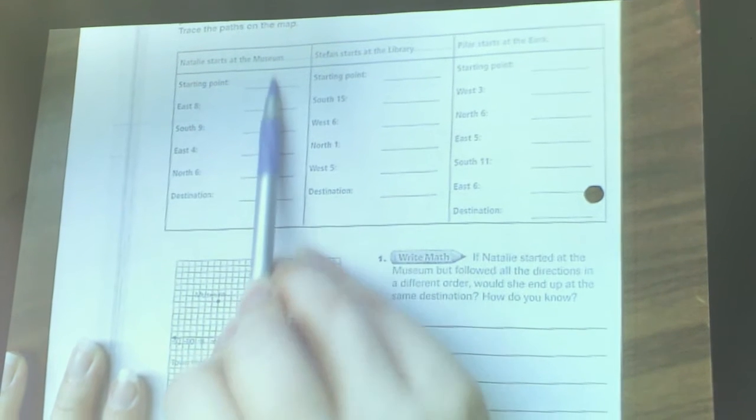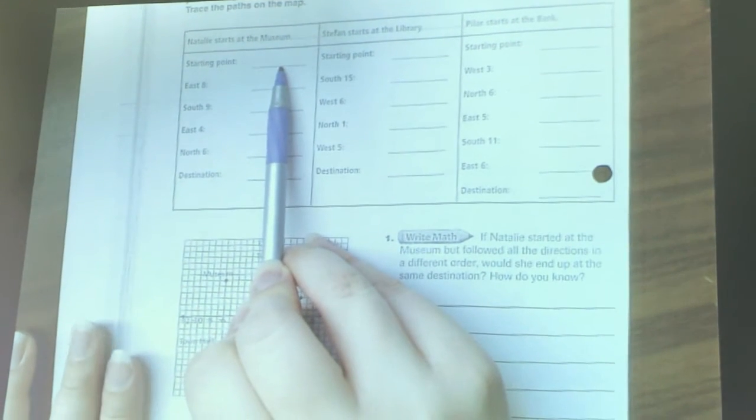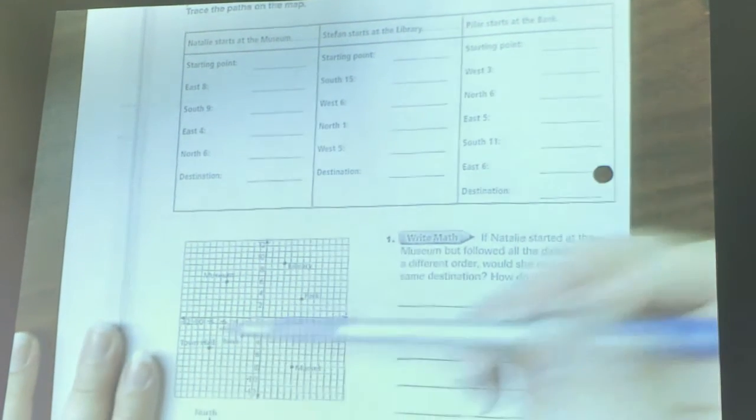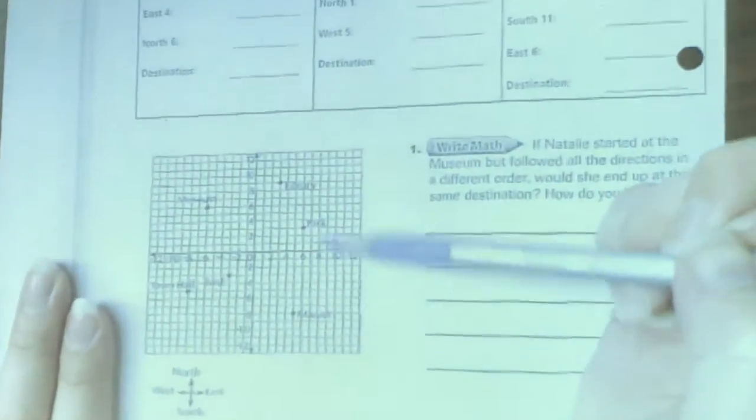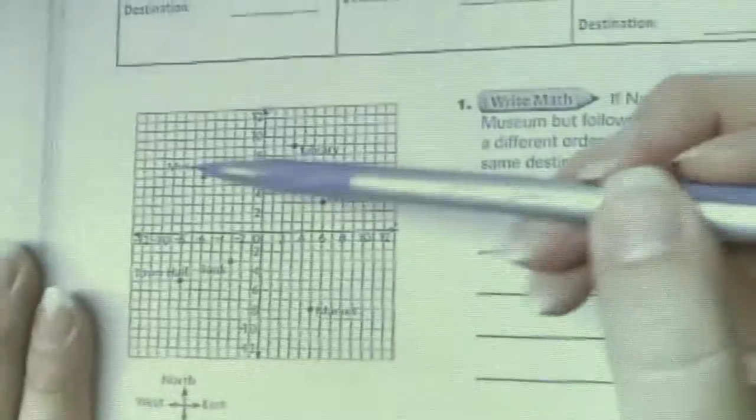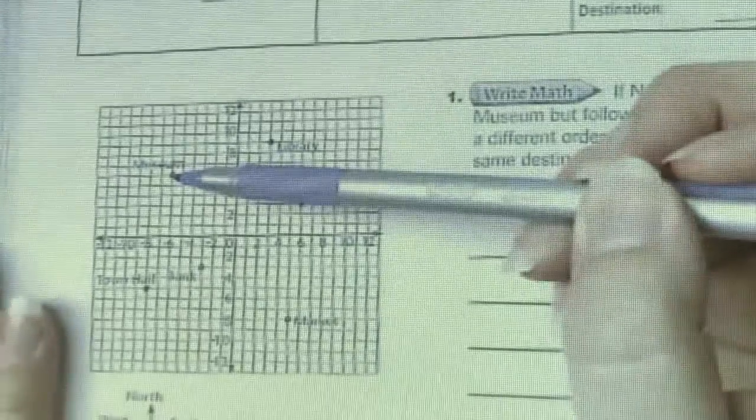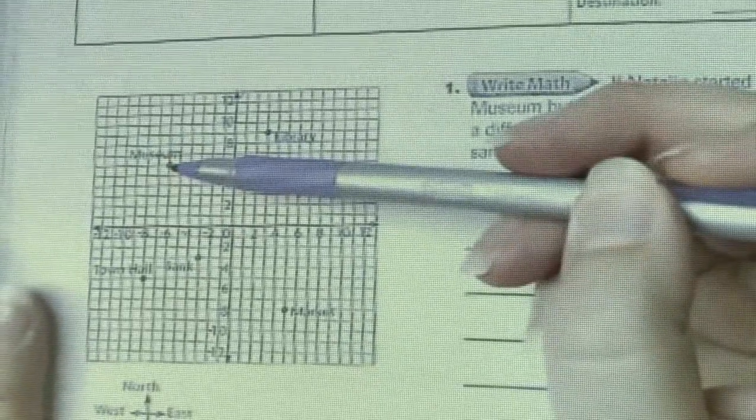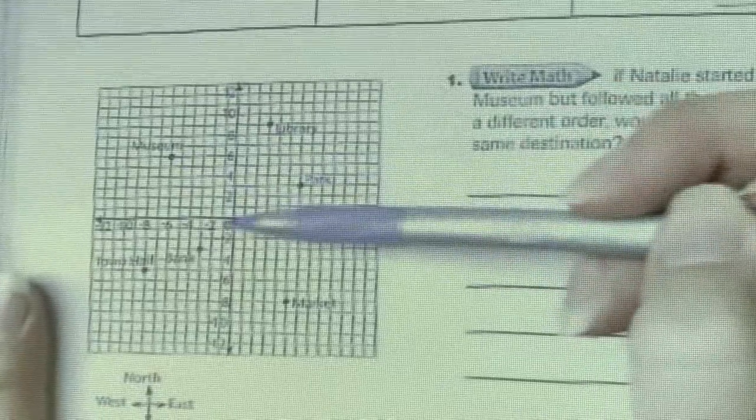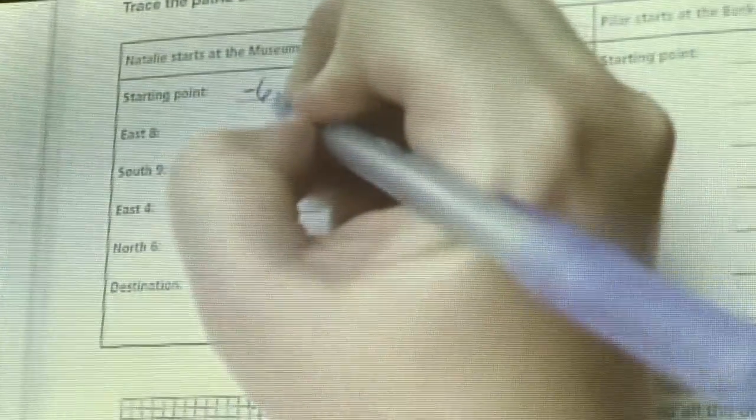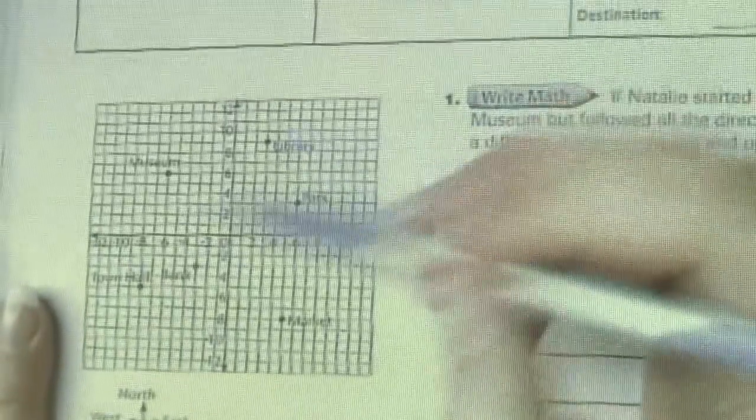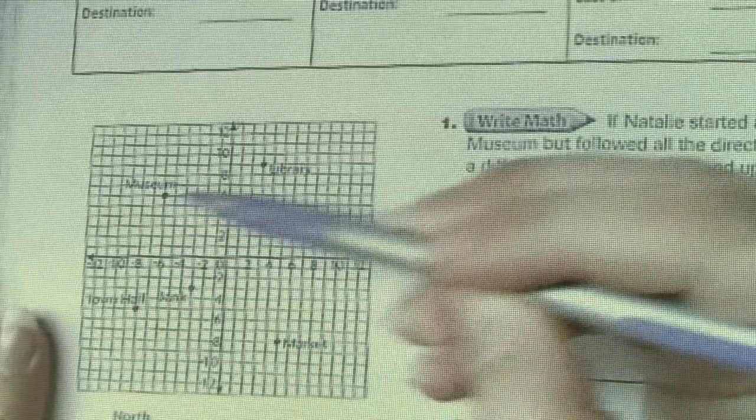On number one at the top of this chart, it says Natalie starts at the museum, and then it asks for the starting point or the starting coordinate. So down here I need to find where it says the museum, and there's the museum right there. I need to find what that coordinate is. I know that I have to run back to negative 6 and I have to jump up to positive 6.